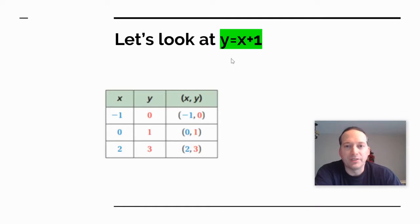If I plug zero in, zero plus one is one. So when X is zero, Y is one. So that solution would be zero, one. Last one in this case is two. If X is two, two plus one is three. So it would be two, three.